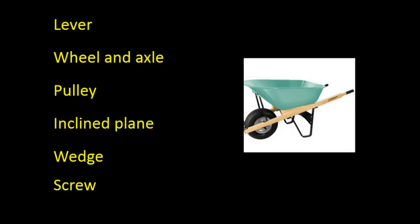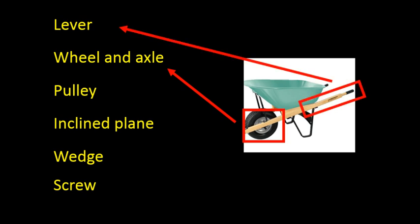Okay, so this is our first compound machine. Looking at this wheelbarrow, it's made up of two basic simple machines. The first one being a wheel and axle, and then it's attached to two long handles. The handles represent levers, so the wheelbarrow is made up of wheel and axle and lever.